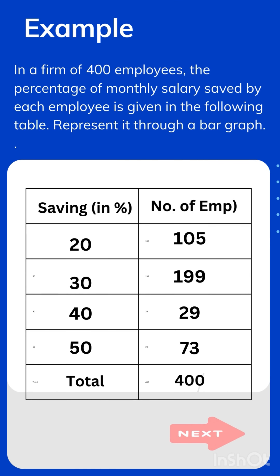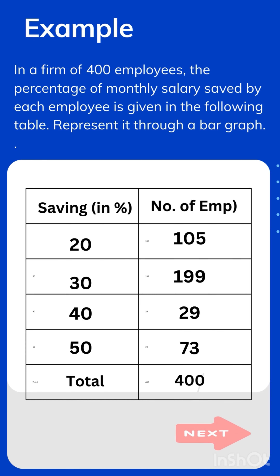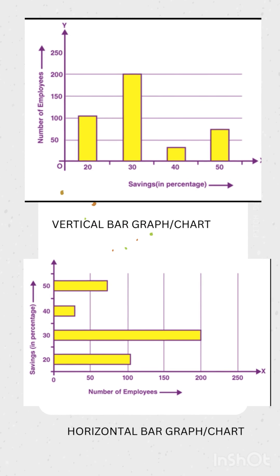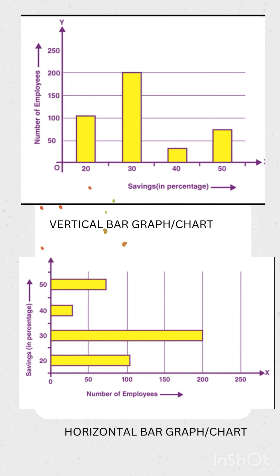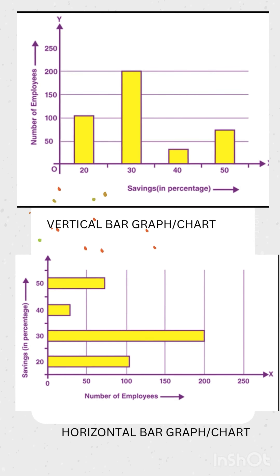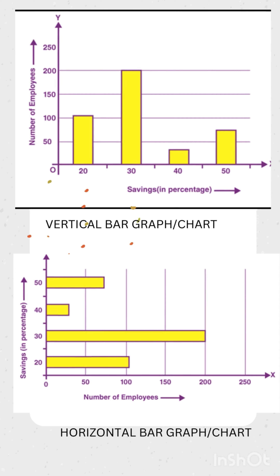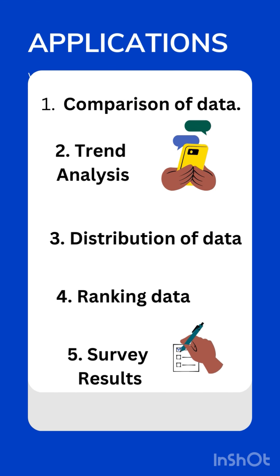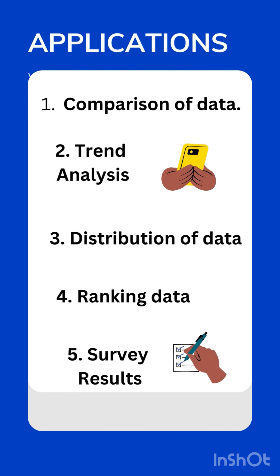Here we have a question with two columns given — one is our x-axis and one is our y-axis. We have taken the saving column on the x-axis and number of employees on the y-axis. The values of saving are allotted to the corresponding number of employees as given by the data.